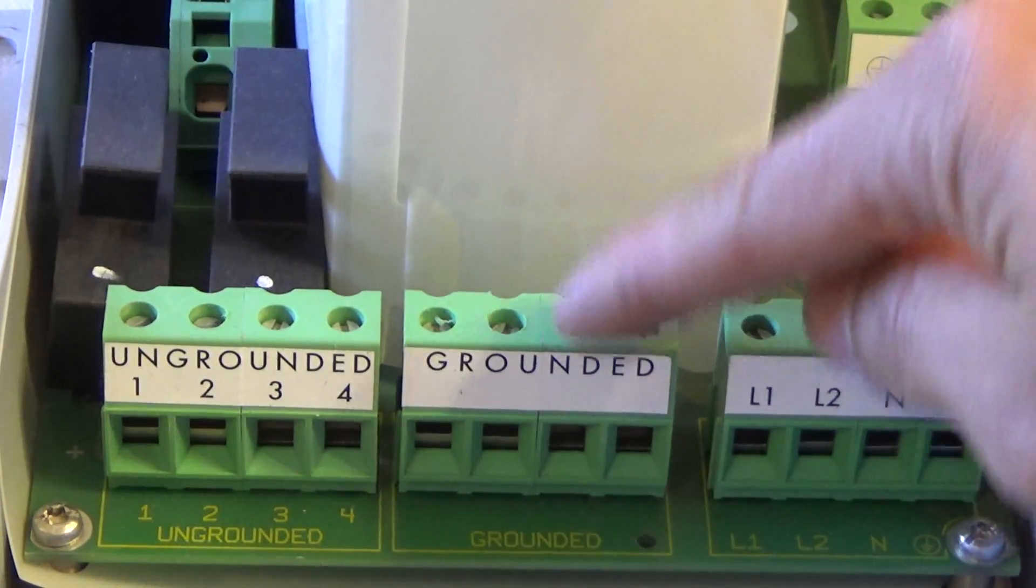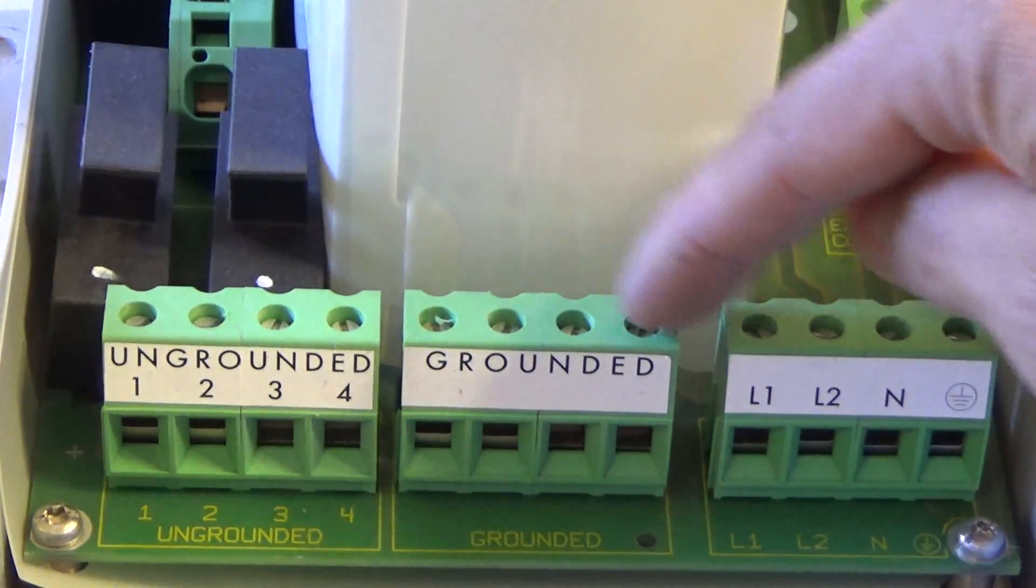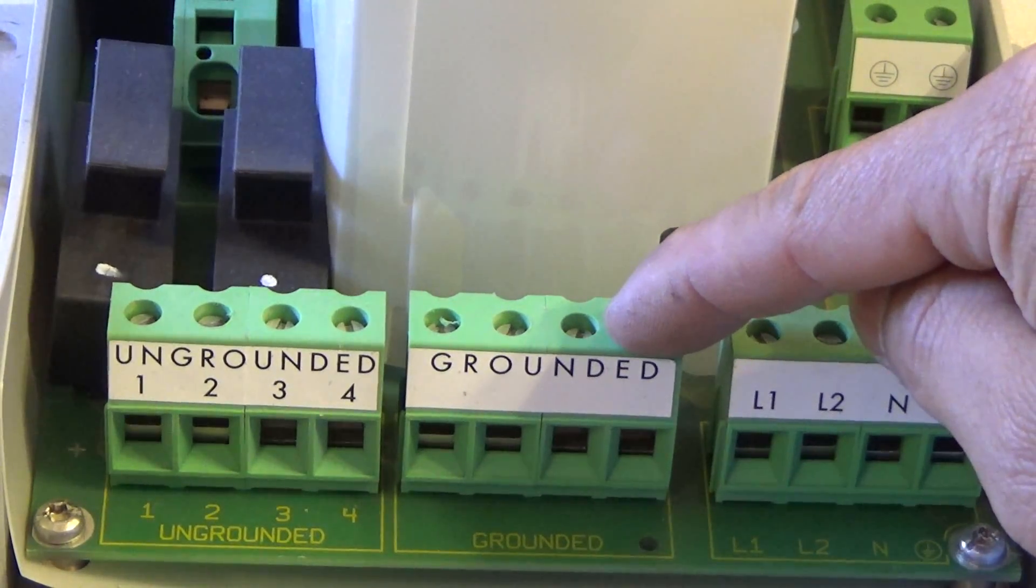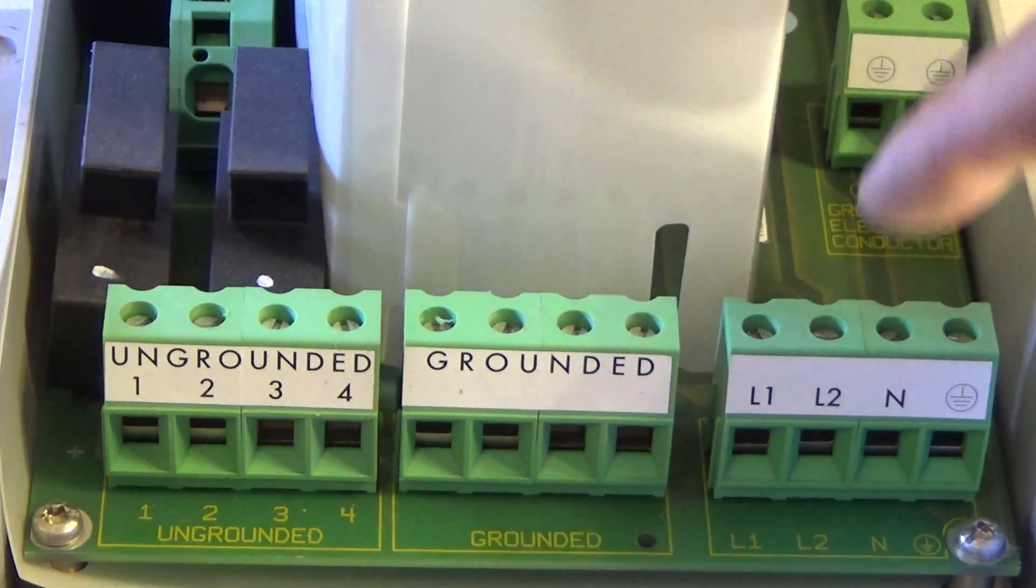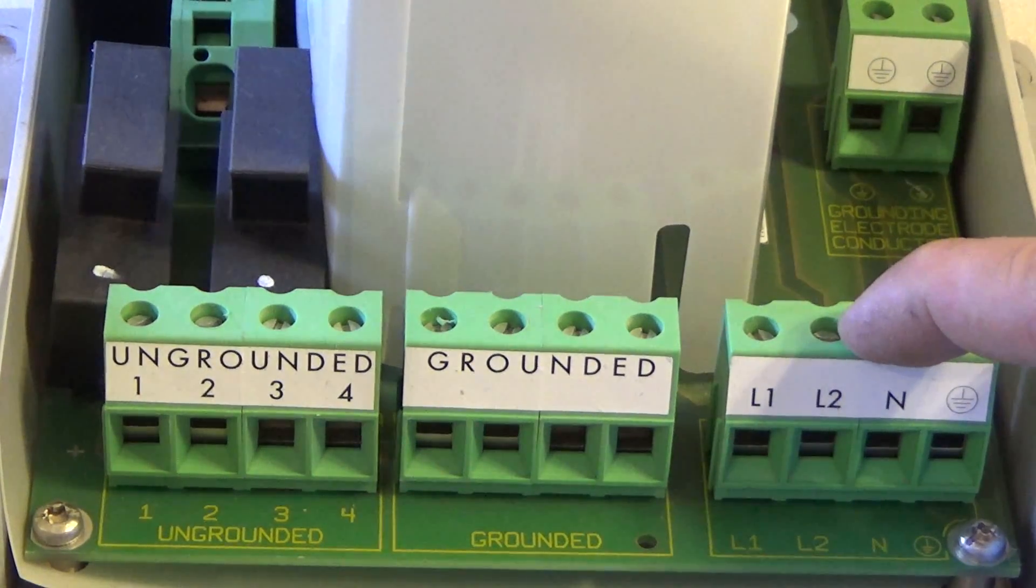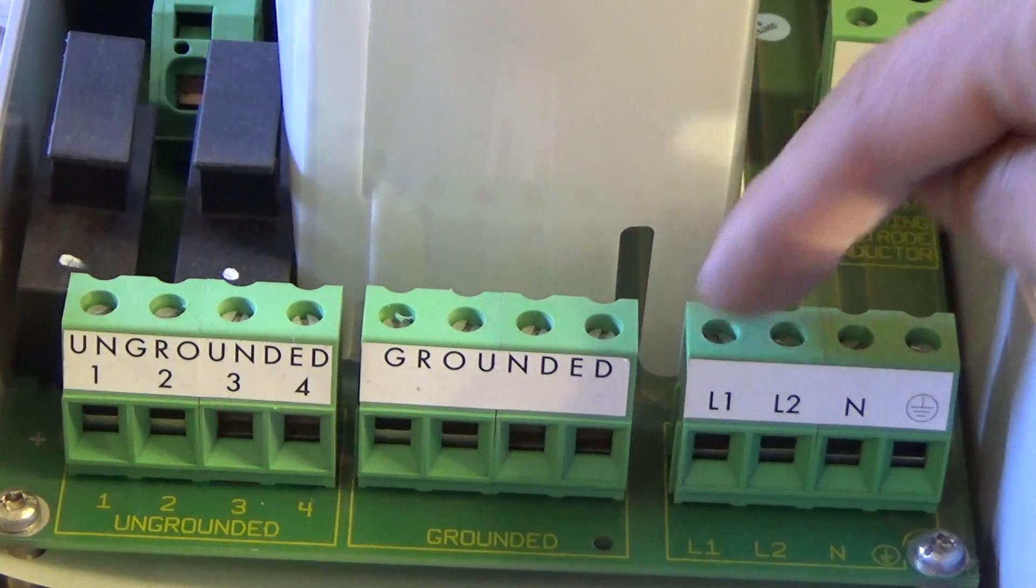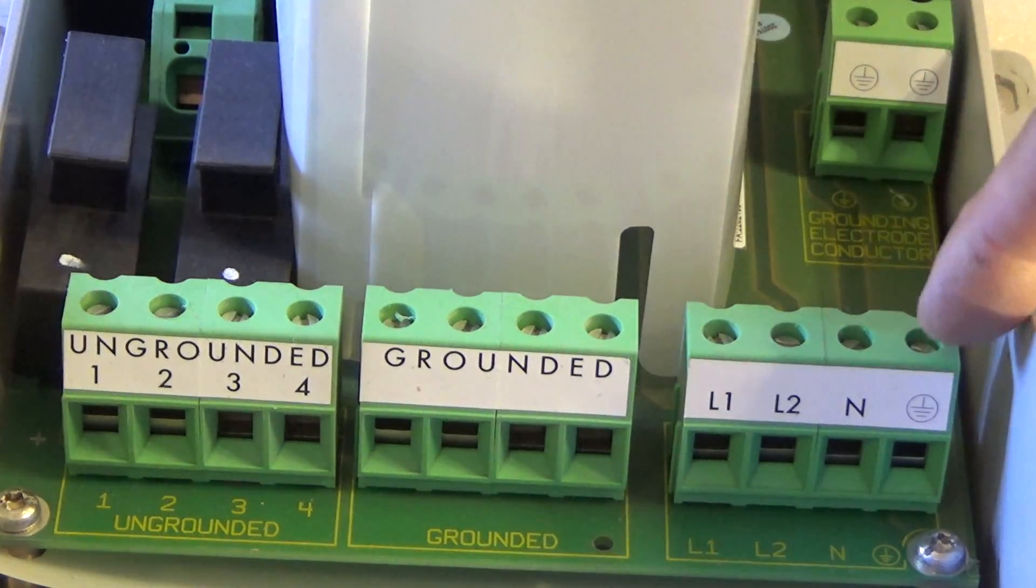This is the negative. So four of these connections are negative coming from the solar panels. And this is the AC lines. We got line one hot, line two hot, neutral, and ground.